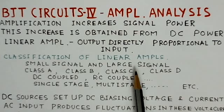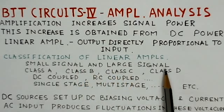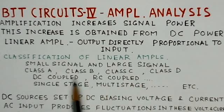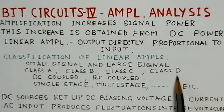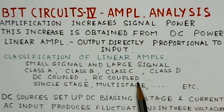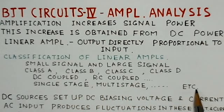We classify amplifiers depending upon their mode of operation — like small signal and large signal amplifiers, depending upon signal strength. Class A, class B, class C, and class D amplifiers depend on biasing alignment. DC-coupled or RC-coupled types are based on the coupling method used. Then again, single stage or multi-stage amplifiers — there are many more classifications.